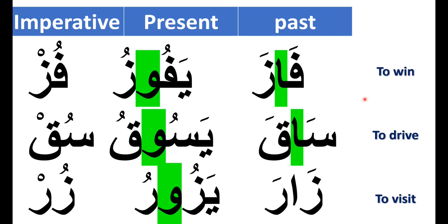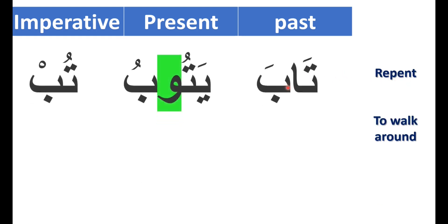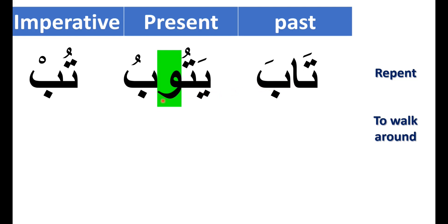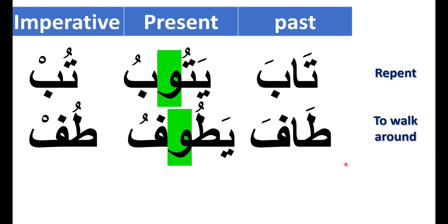To win: فاز, he won; يفوز, he wins; فز, win. To drive: ساق, he drove; يسوق, he drives; سق, drive. To visit: زار, he visited; يزور, he visits; زر, visit. To repent: تاب, he repented; يتوب, he repents; تب, repent. To walk around: طاف, he walked around; يطوف, he walks around; طف, walk around.